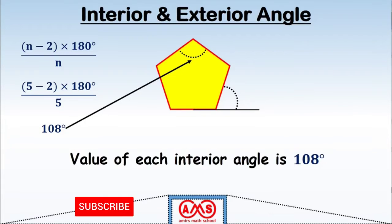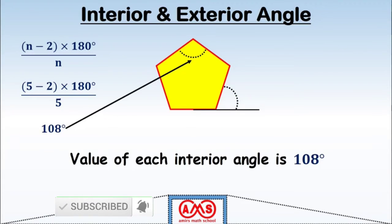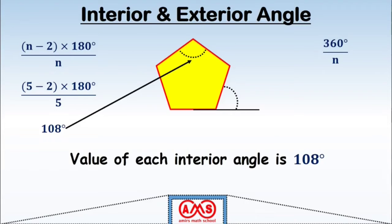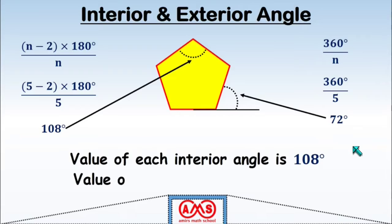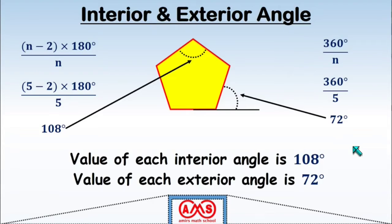The exterior angle for a regular pentagon: we know the sum of all exterior angles of any regular polygon is 360 degrees. So the formula is 360 divided by n, where n is the number of sides. In the case of a pentagon, 360 divided by 5 equals 72 degrees. So the value of each exterior angle for any regular pentagon is 72 degrees.